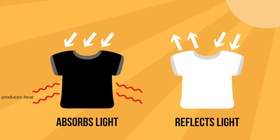Absorption and reflection: the ability of an object to absorb or reflect light is determined by its surface properties. When an object appears black, it means it is absorbing most of the light that falls on it while reflecting very little. On the other hand, when an object appears white, it reflects most of the light and absorbs very little.